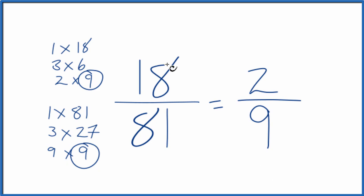And we've simplified the fraction 18 over 81 down to 2 ninths. And we can't simplify this any further. If you divide 18 by 81 or 2 by 9, you'll get the same decimal value. They're equivalent fractions. It's just that we've simplified 18 over 81 down to 2 ninths.